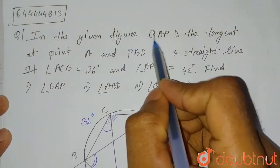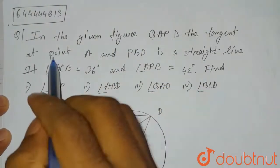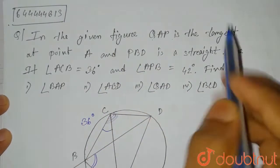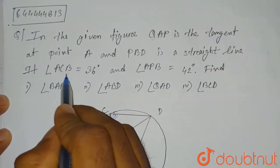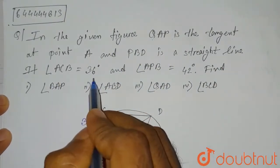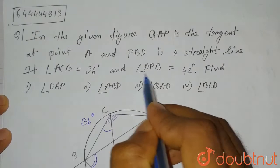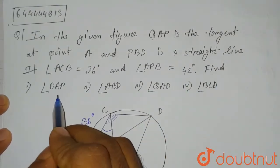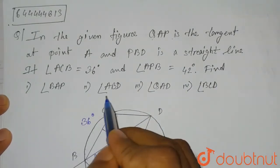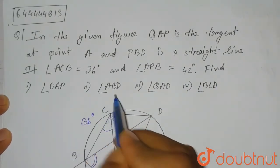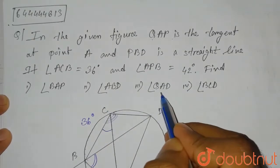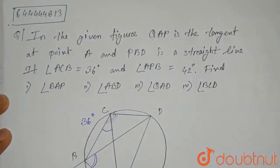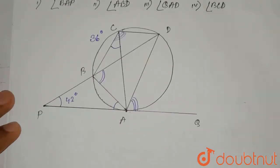Hello everyone. The question is: in the given figure, QAP is the tangent at point A and PBD is a straight line. If angle ACB is equal to 36 degrees and angle APB is equal to 42 degrees, then find: first, angle BAP; second, angle ABD; third, angle QAD; and fourth, angle BCD.